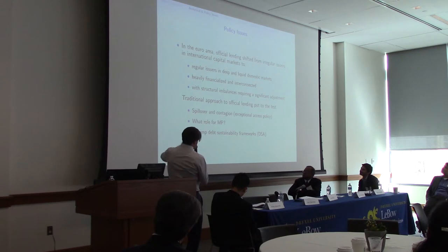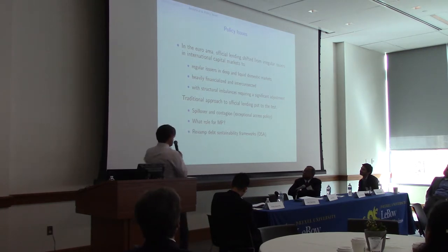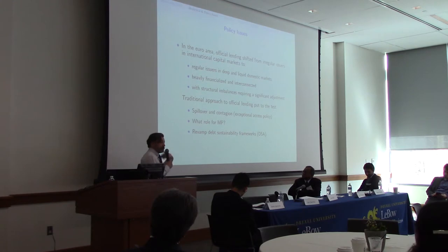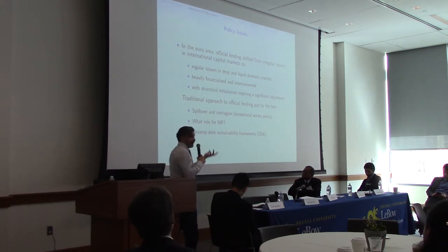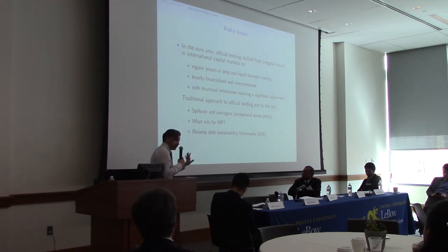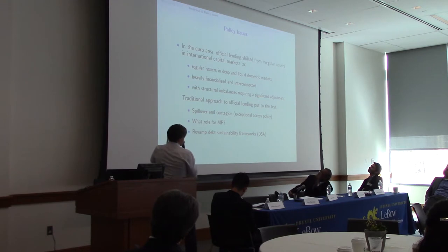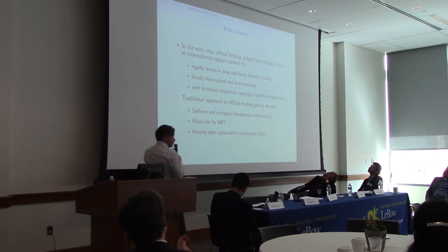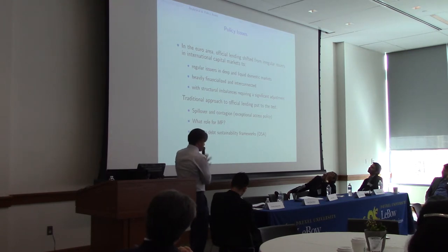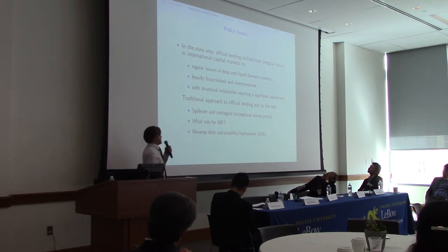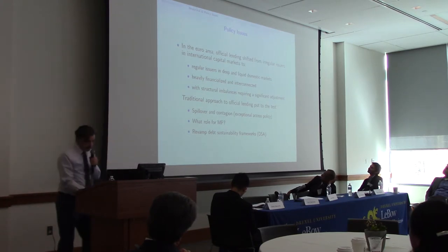With the arrival of the Euro Area crisis, official lending has changed massively. The IMF had to modify its exceptional access policy to introduce a systemic exemption, allowing lending despite Greece not being considered sustainable — because of potential systemic effects. This change has implications for managing spillovers and contagion, which could have important implications for monetary policy and for how authorities evaluate debt sustainability frameworks.